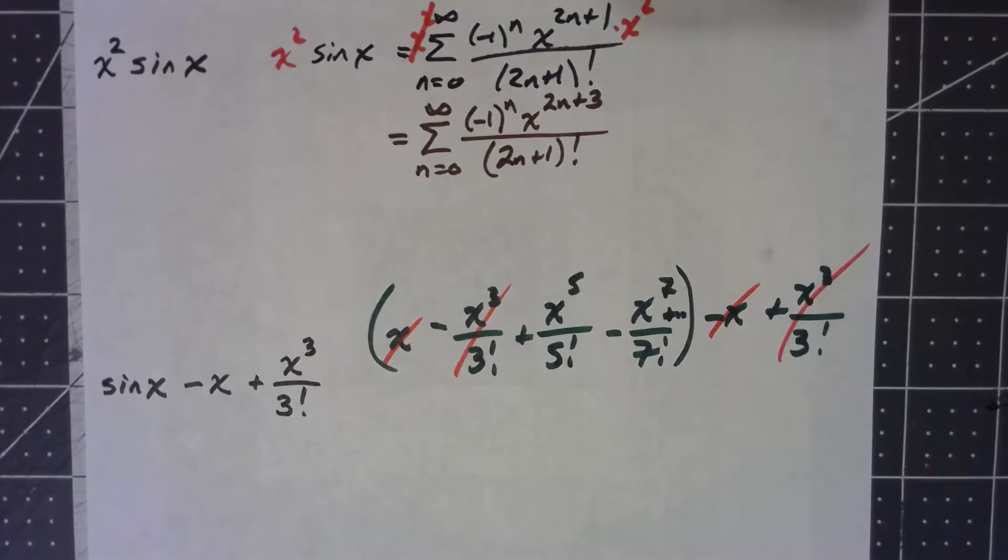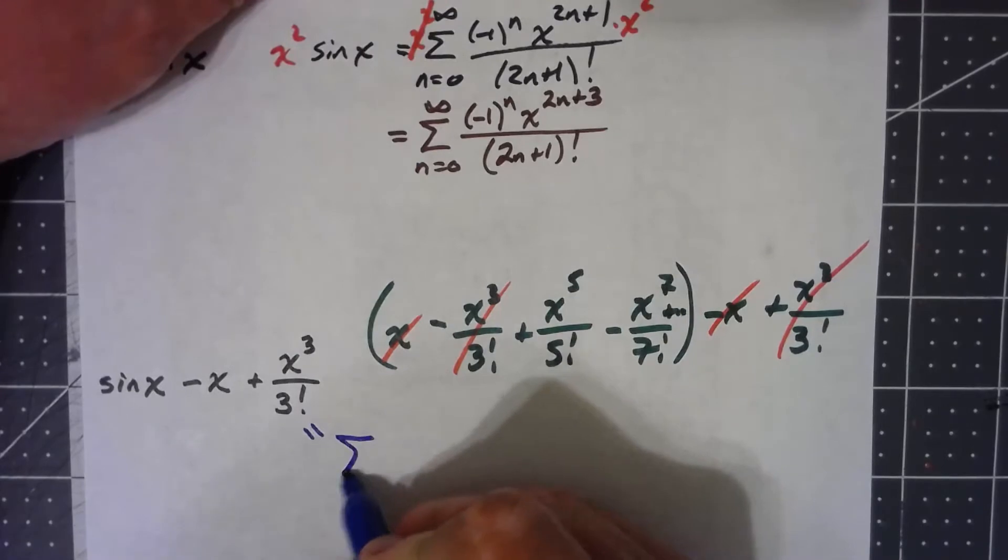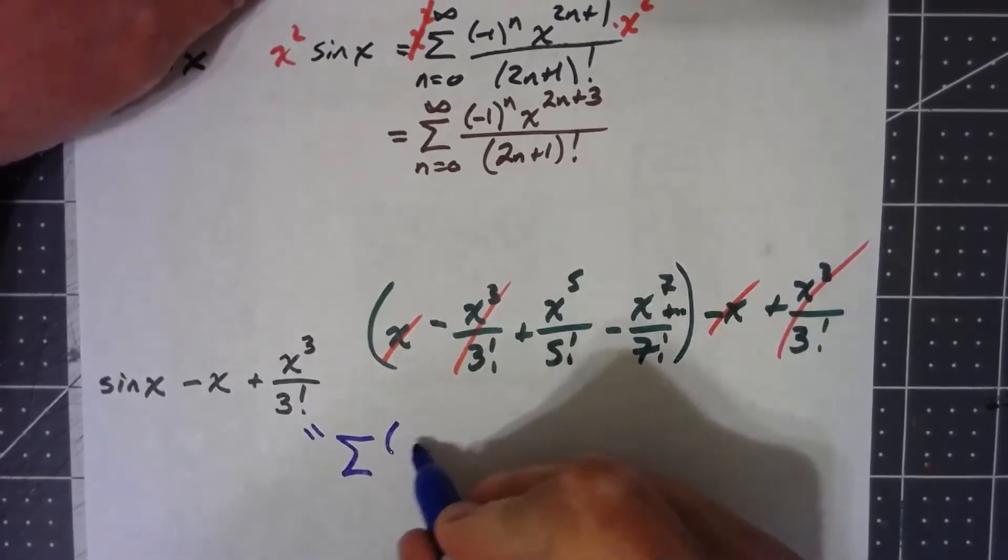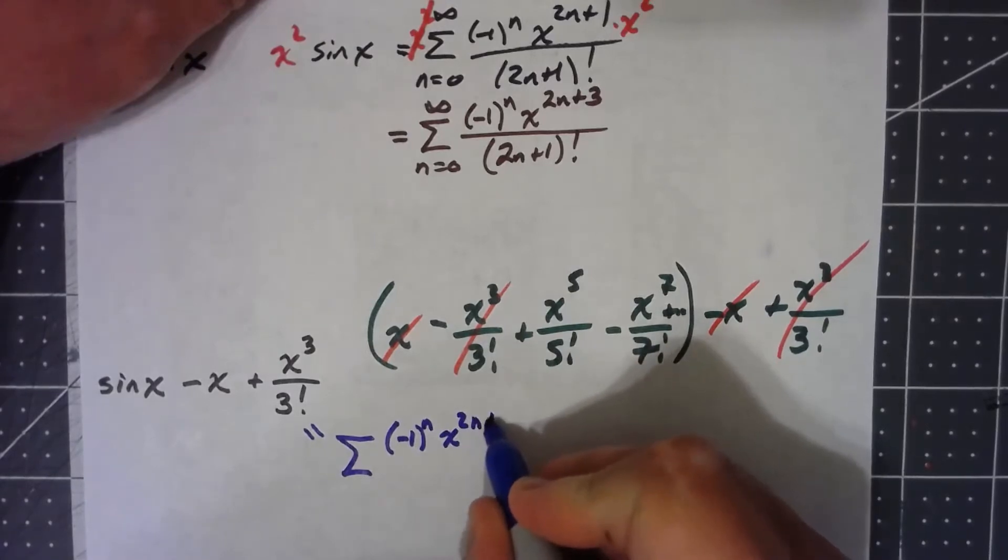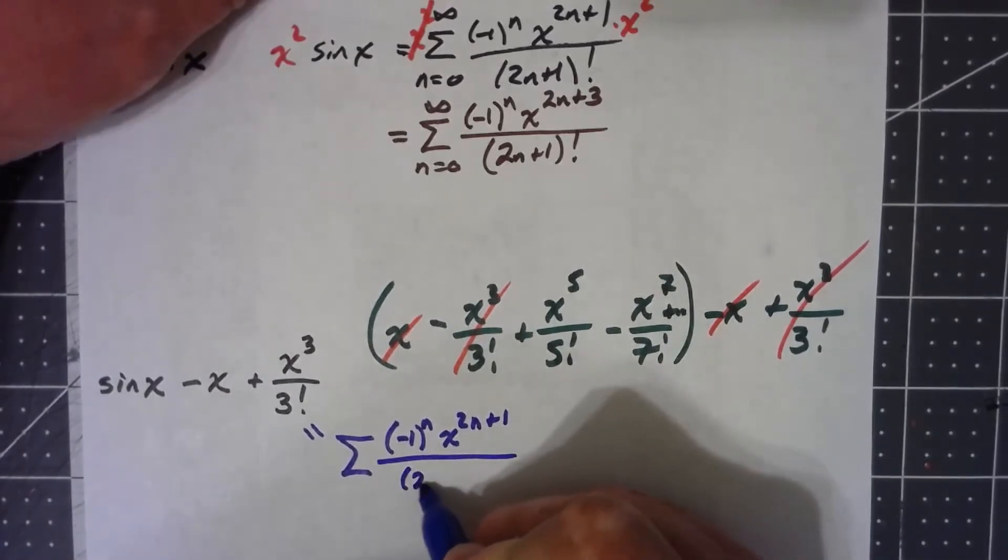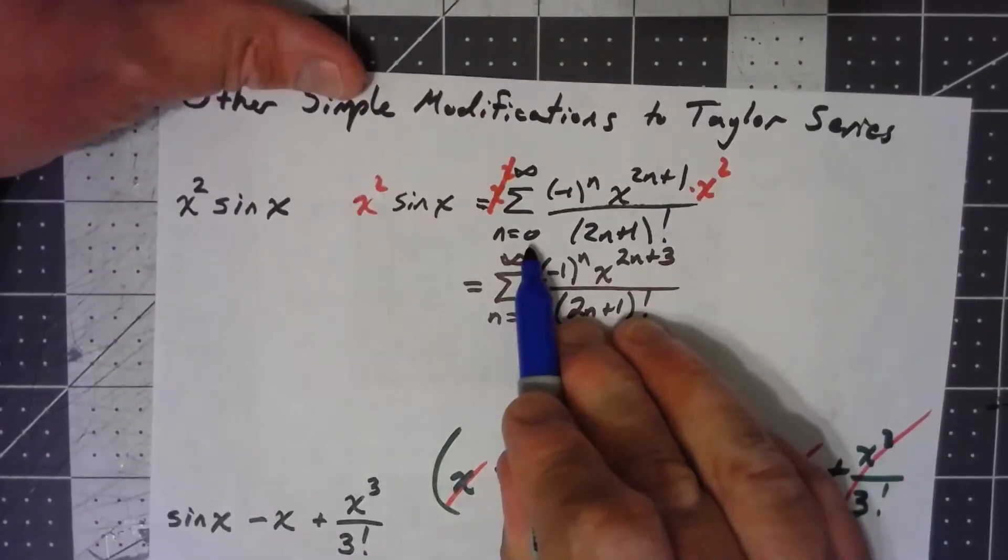So, the power series for this, it's actually the same exact formula as I had for sine of x. The only thing is, rather than starting from 0, the n equals 0 term canceled out, the n equals 1 term canceled out.